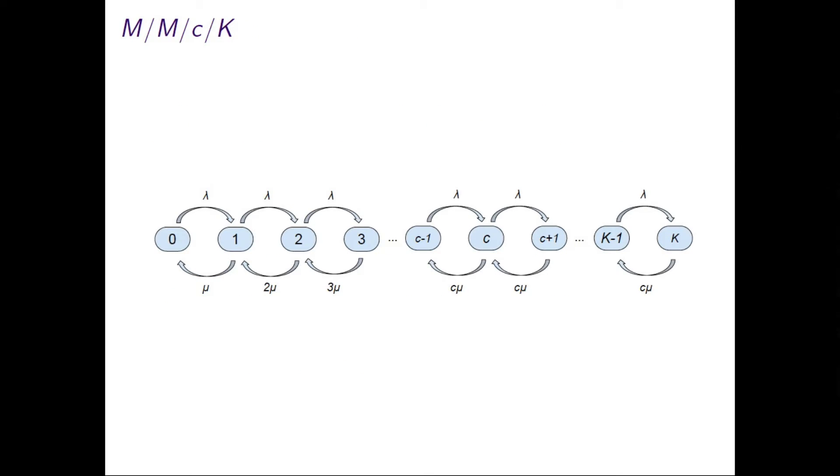Now this can be represented by what's called a continuous Markov chain. What we have here are the states of the system. For example, the system could have no one in it, and then I can go from having no one in it to having one person in it, from one person to two people. This happens at a particular rate, the arrival rate, and in general the letter lambda is used.